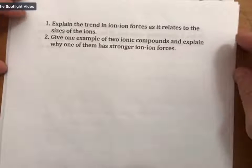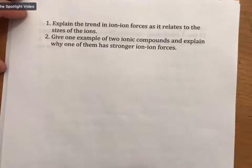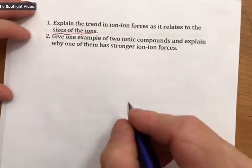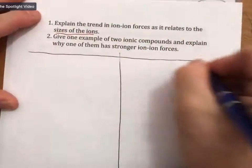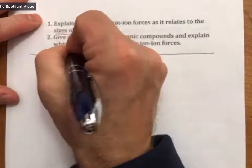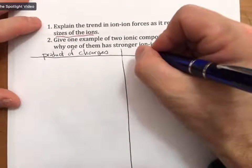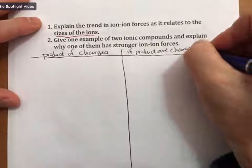Explain the trend in ion-ion forces as it relates to the sizes of the ions. Give one example of two ionic compounds and explain why one of them has stronger ion-ion forces. So this one specifically says sizes of the ions, and let's take you through this process. In fact, I think there's two questions in this, and so that's because there are two trends in ion-ion forces, one of which we've already talked about, but I'm going to go over it again. It deals with the product of charges, and the other one deals with, so if product of charges are equal,